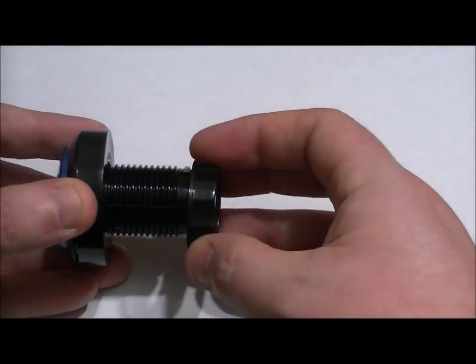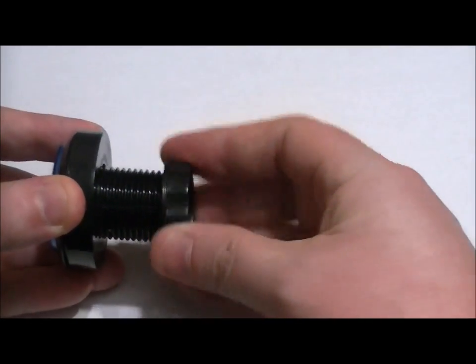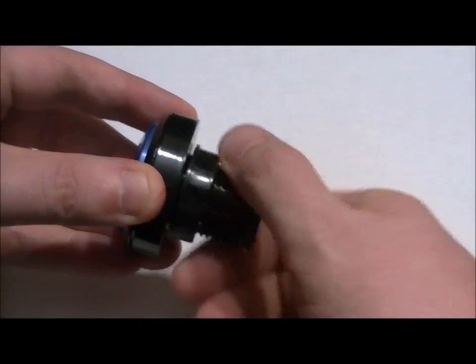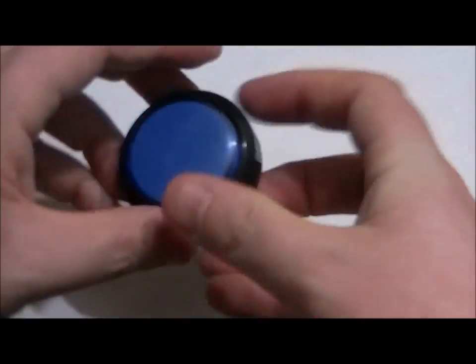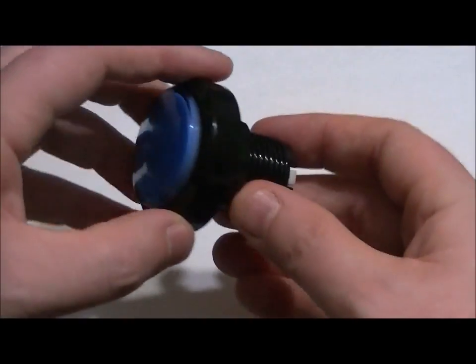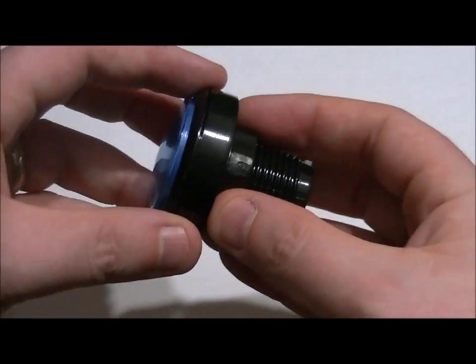Next you take the mounting nut and you screw it on, making sure you're holding that first piece in place. Once it's tight, of course you'd want to use those mounting pieces once you've mounted it into a fixture. But just for the sake of keeping everything together right now, I'm going to put those two pieces on.